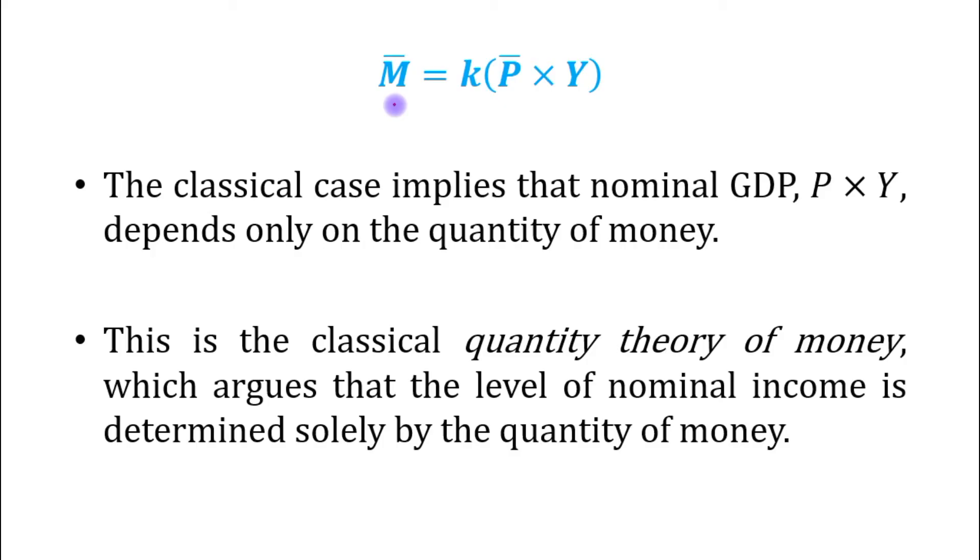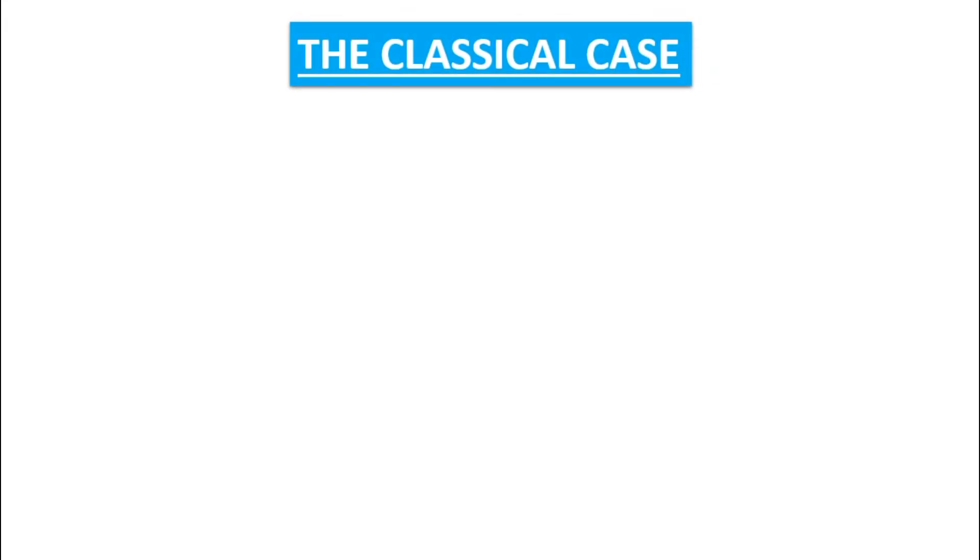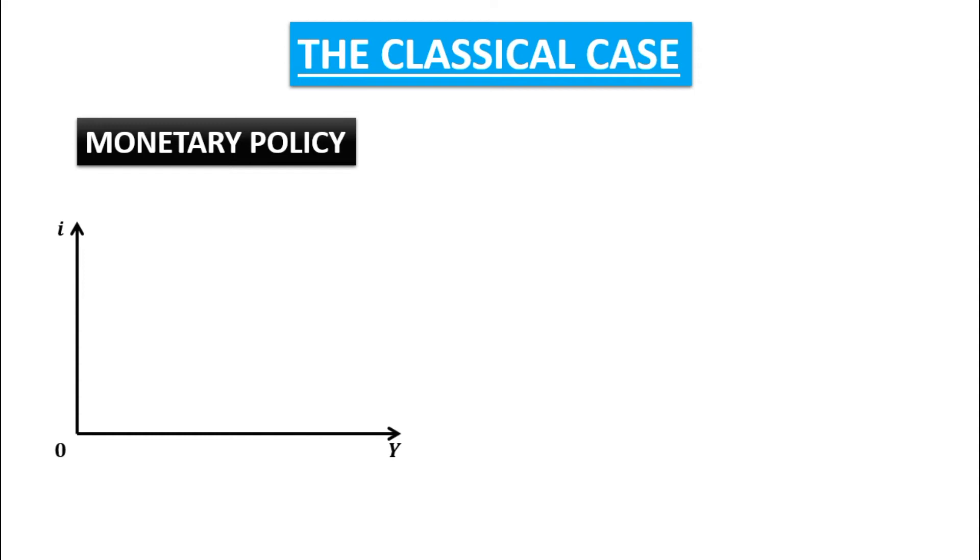The classical case: let us first see the case of monetary policy. Here we have two axes, this is downward sloping IS schedule, and LM curve is vertical. Equilibrium interest rate is OI1 and equilibrium output level is OY1. Now in case of expansionary monetary policy, LM curve will shift rightwards.